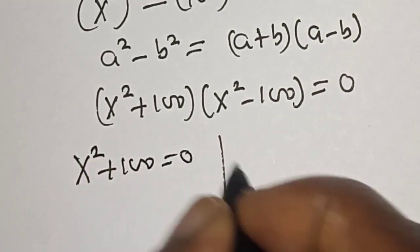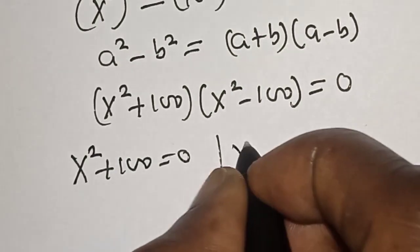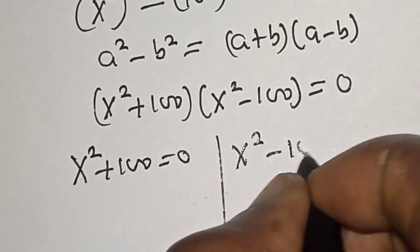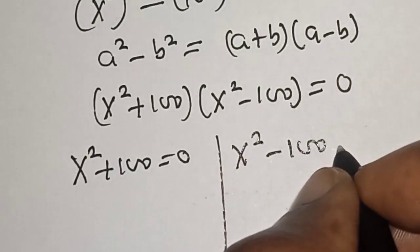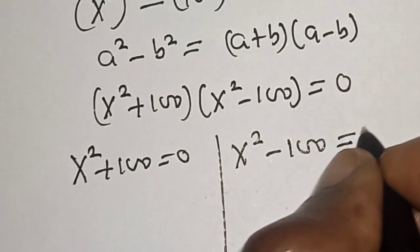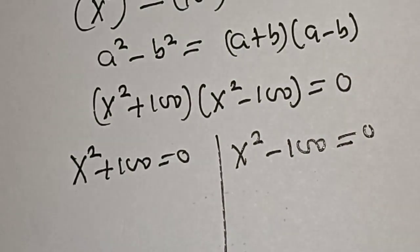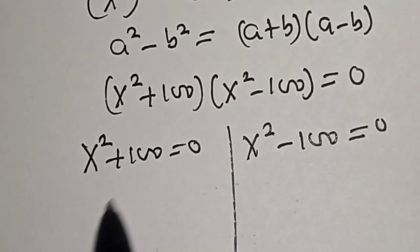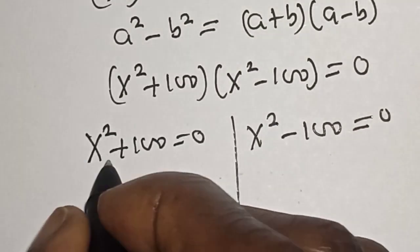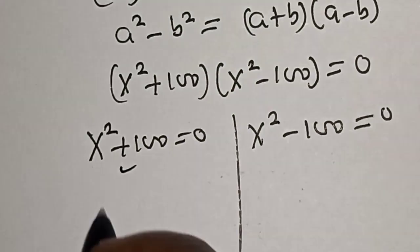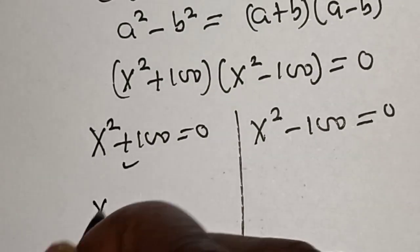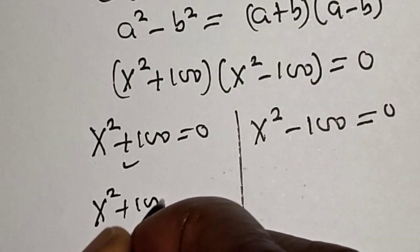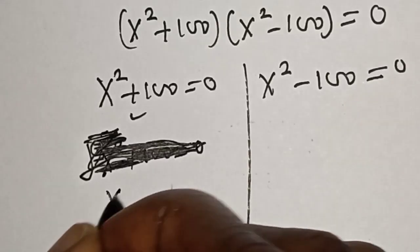There are two cases here. Case one: s squared plus 100 is equal to 0. Case two: s squared minus 100 is equal to 0. We want to find all values of s. Let's work with case one: s squared plus 100 is equal to 0.